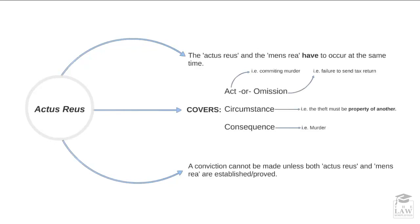What we can consider as an act, for instance, is committing murder — the unlawful killing of a human being. An omission, on the other hand, may be, for example, the failure to send a tax return. These two examples are wholly different and poles apart, but they illustrate the difference between an act and an omission. We will discuss omission in more detail later on.